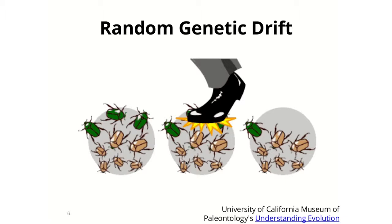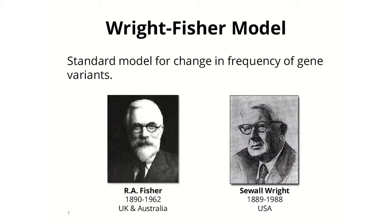That was natural selection. We also have a different force called random genetic drift. In random genetic drift, a beetle can miss out on reproduction or not survive, not because of its color, but just because of random effects. This shoe didn't step on the beetle because it was green or brown — it just stepped on it by accident, without any regard to color.